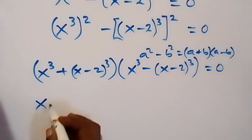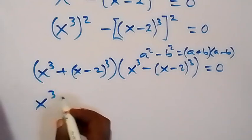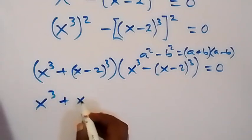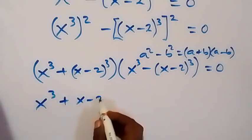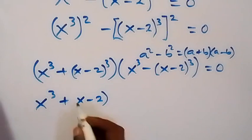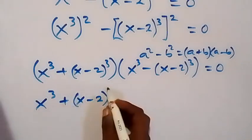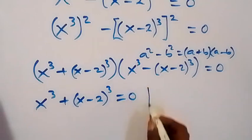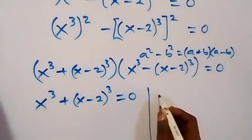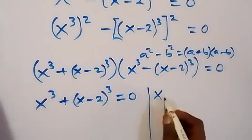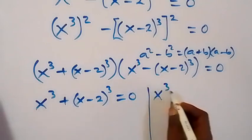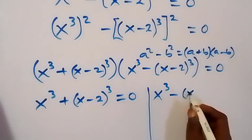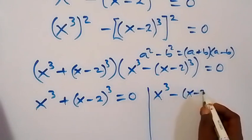From here we have two cases. The first case: x cubed plus (x minus 2) cubed equals 0. The second case: x cubed minus (x minus 2) cubed equals 0.